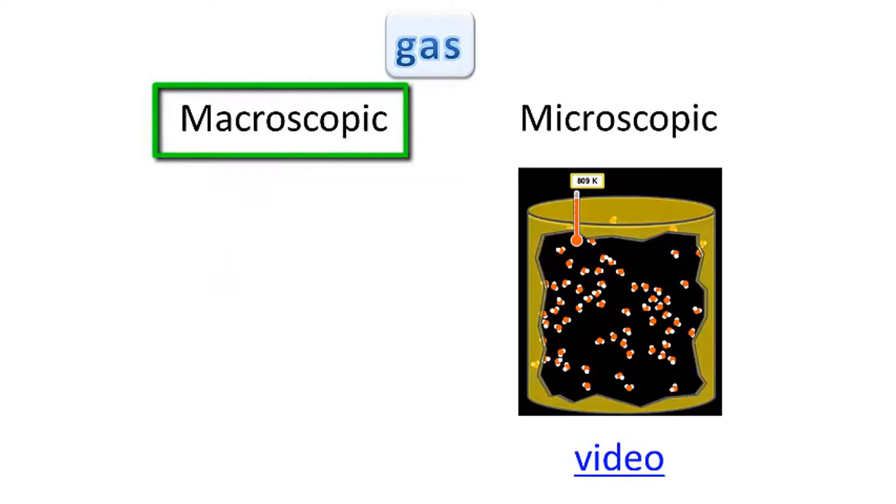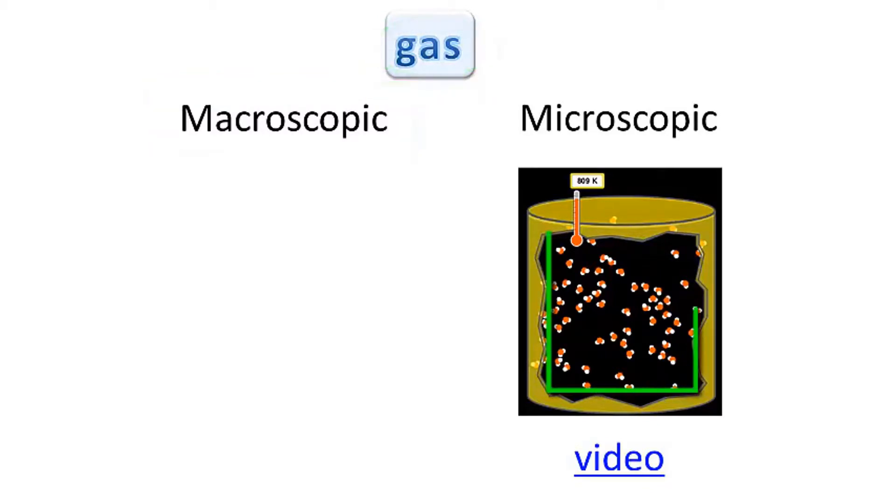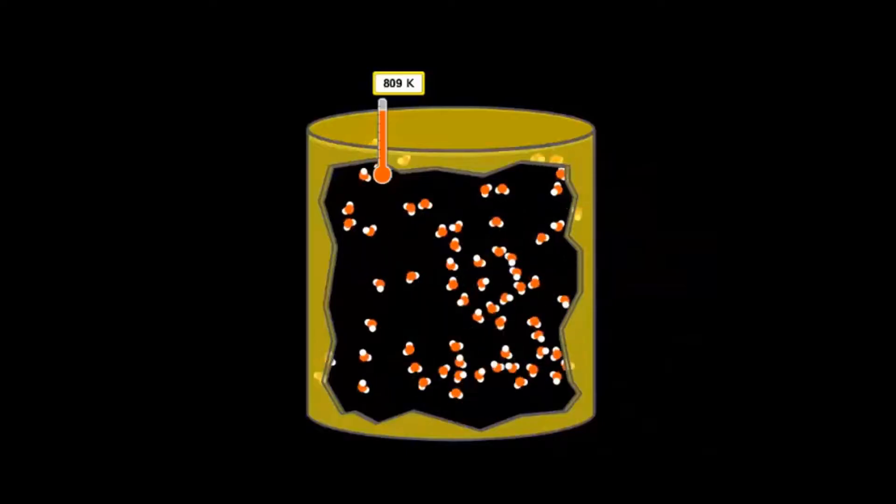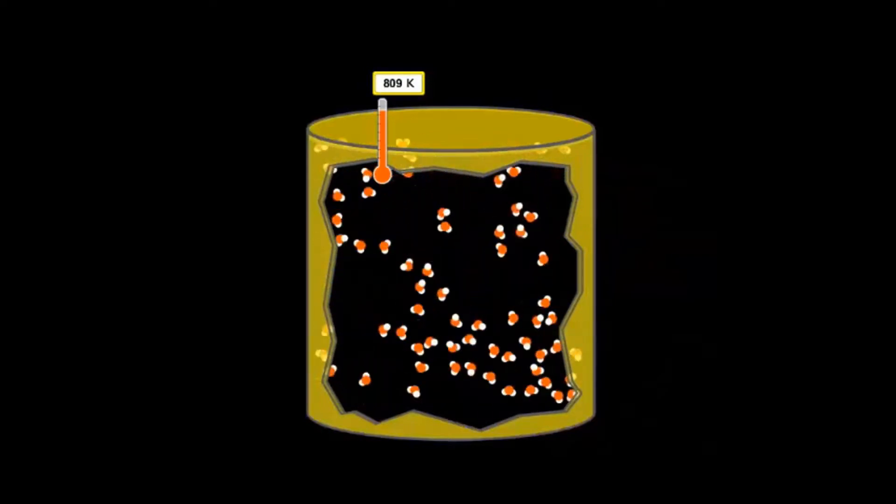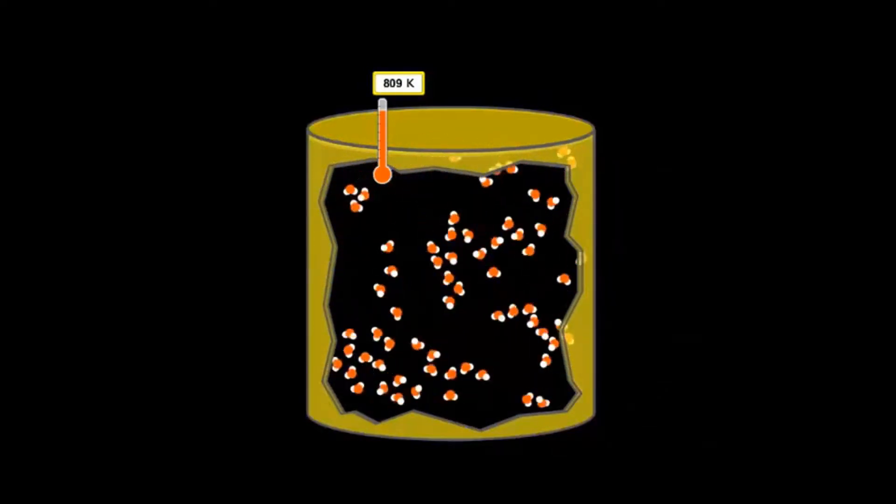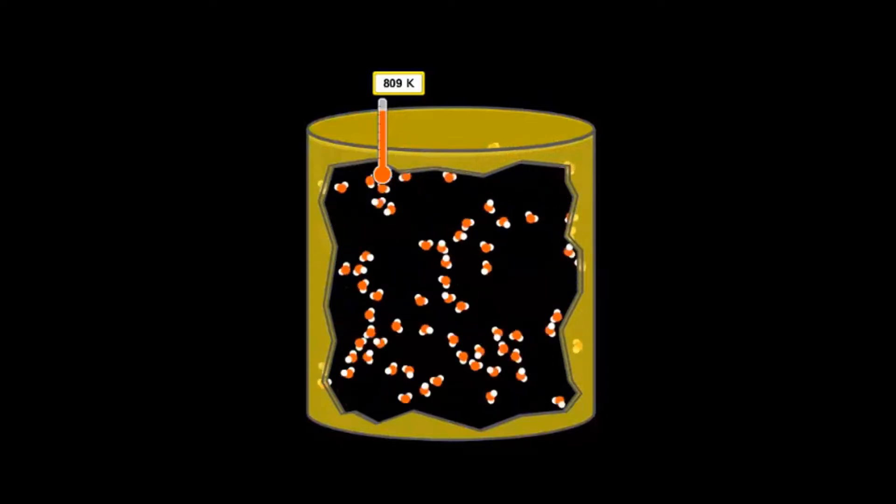Now I can't show you a macroscopic view of water vapor, gaseous water, because it's invisible, but it's all around you in the air. And the more there is in the air, the more humid the air feels. And here we have a microscopic representation of it. Let's watch a simulation video. We can see that the particles jump around filling the container and hitting the sides of the container.